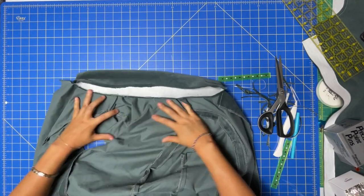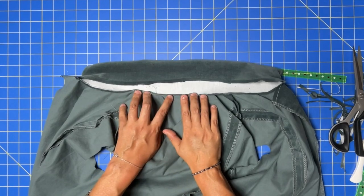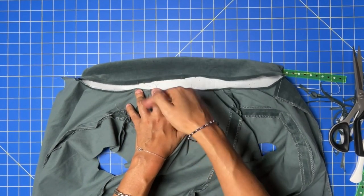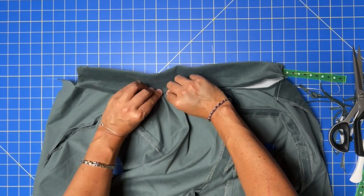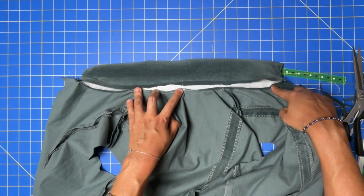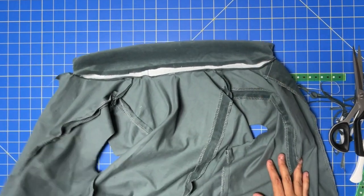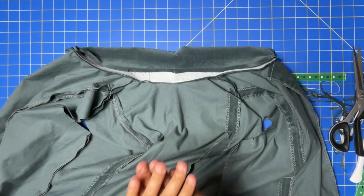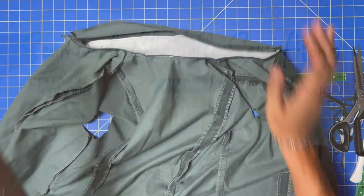Last step for the collar for now is to go to your iron and press the seam allowances between the shoulder seams up toward the collar. You want to make sure that this is all pressed up—this is going to end up in the facing, which we are going to work on in the next video. Take your time with the collar, be super accurate, and you will have a beautiful result with your collar.